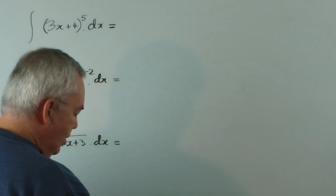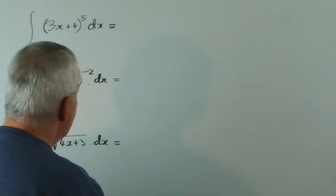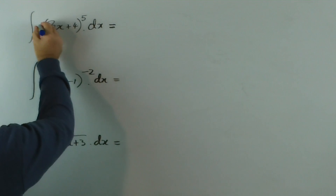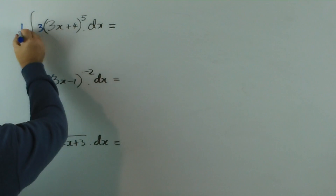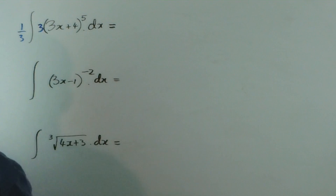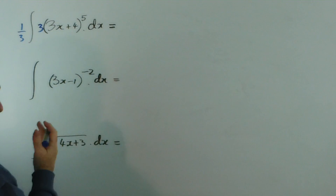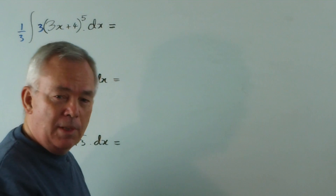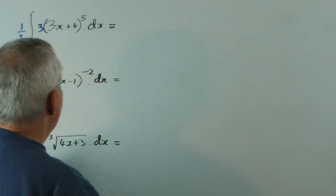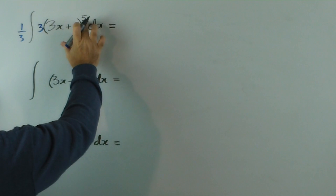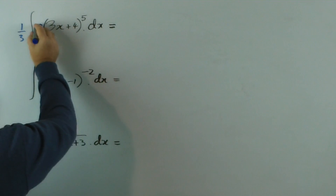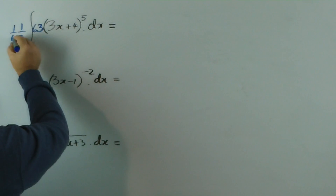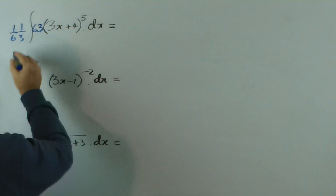So it's very simple. Here's the pattern. The derivative of this is three, so we need to compensate with a third. If we want to follow the full pattern, then we need one more than five, which is a sixth out here as well, in which case we would compensate with a further sixth.